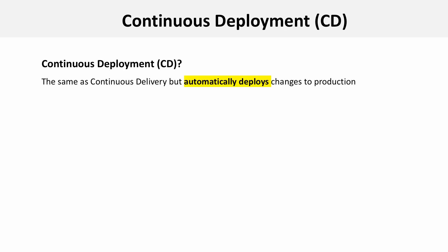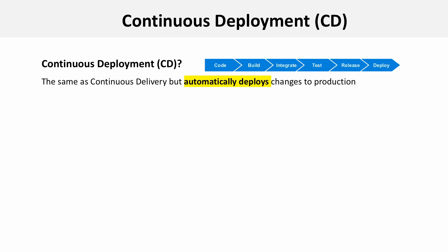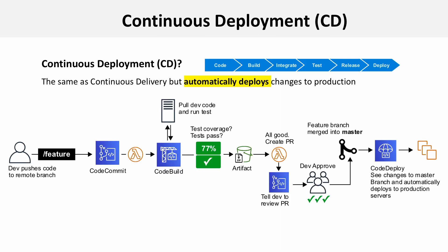We're on our last model here, which is continuous deployment. This is the same as continuous delivery, but it automatically deploys changes to production. There's our pipeline — it's blue all the way across. And here is our technical architecture.